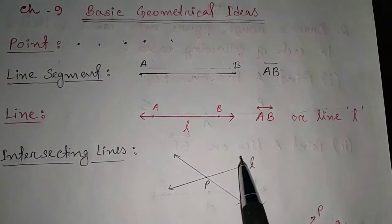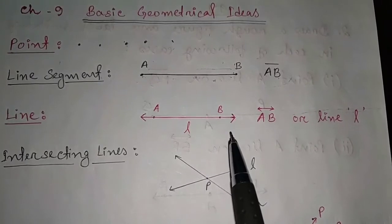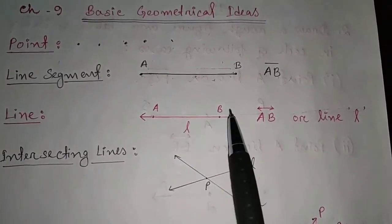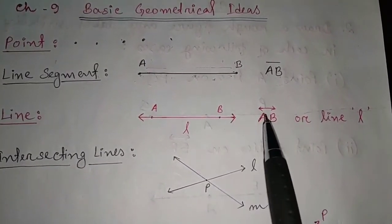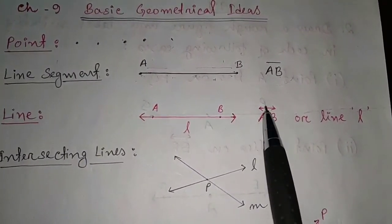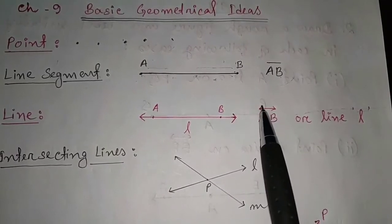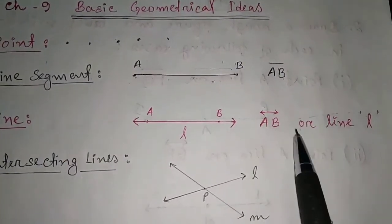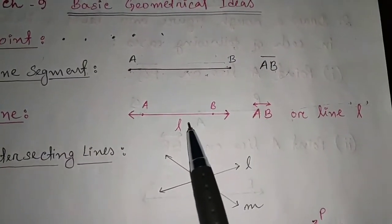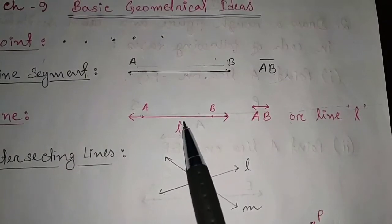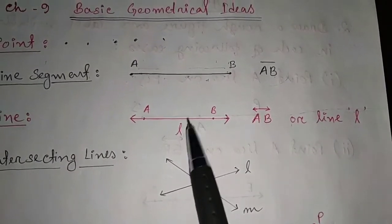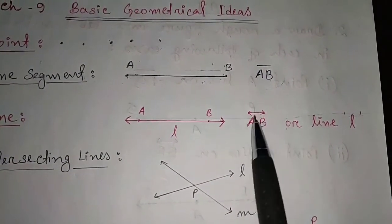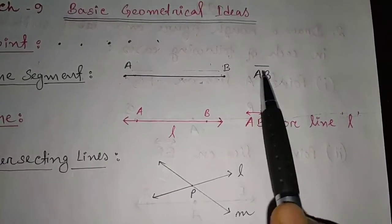This line is named as AB, and above it you have to give the arrow sign on both sides. Or simply you can name the line as L, M, and so on. This is the symbol of a line, and the bar above is the symbol of a line segment.